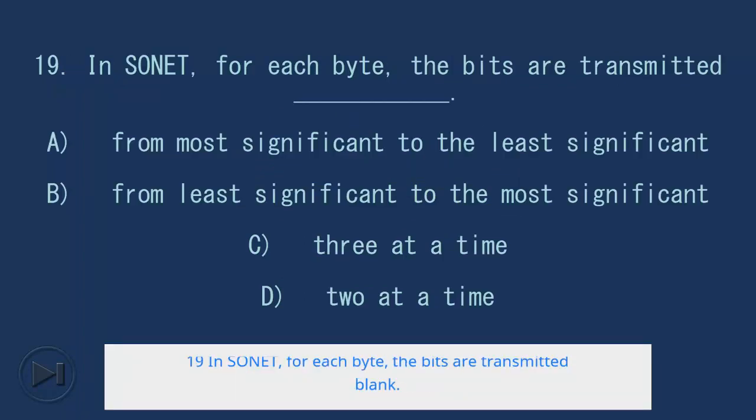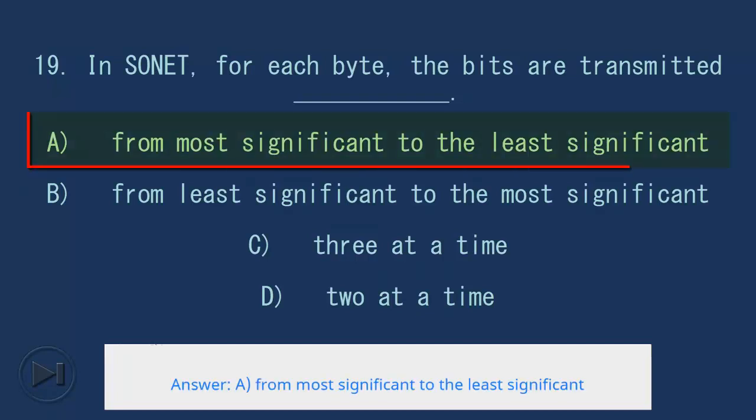19. In SONET, for each byte, the bits are transmitted blank. A. From most significant to the least significant, B. From least significant to the most significant, C. Three at a time, D. Two at a time. Answer: A. From most significant to the least significant.